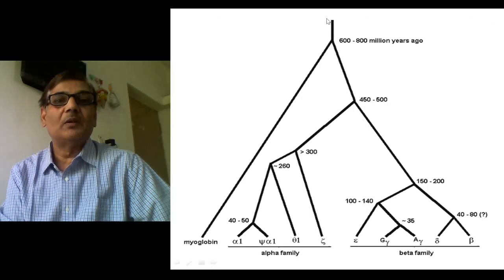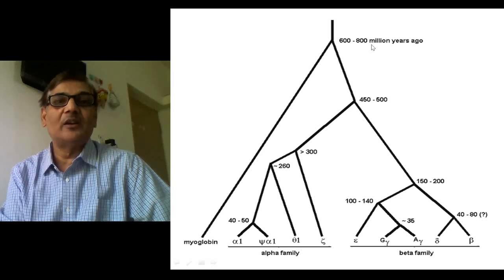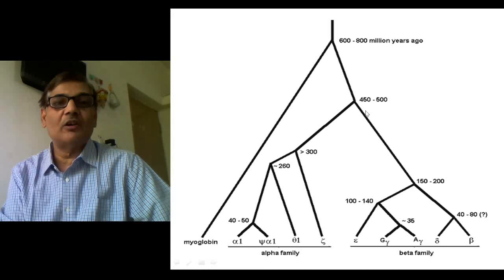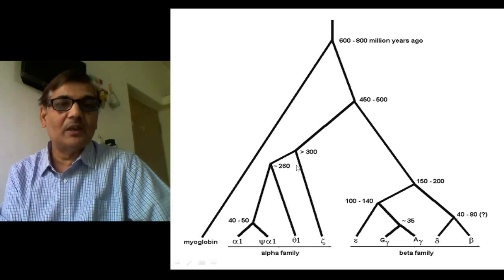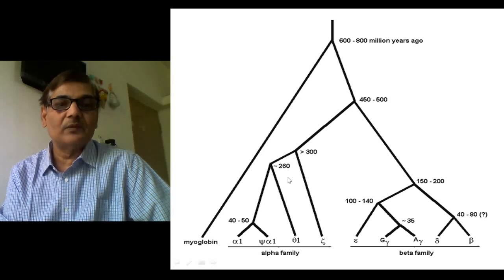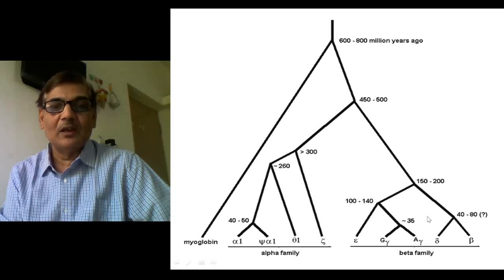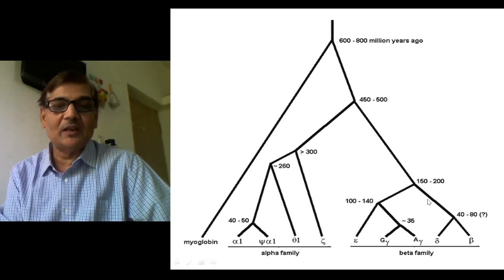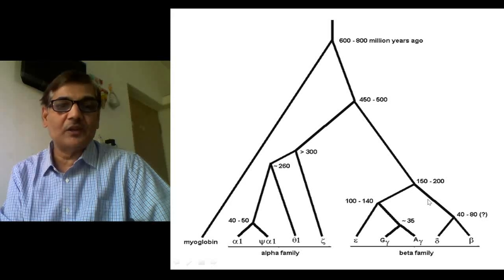This line diagram shows the phylogenetic aspect of alpha and beta genes. This gene originated nearly 600 to 800 million years ago. It is still found in myoglobin. Myoglobin and the ancestral gene actually separated into alpha and beta gene forms nearly 450 to 500 million years ago. The alpha gene family then formed different parts like alpha 1, pseudo-alpha 1, theta 1, and zeta. The beta gene family also duplicated and differentiated into forms like beta, delta, gamma A, gamma G, and epsilon.